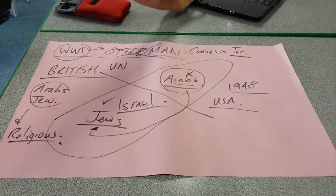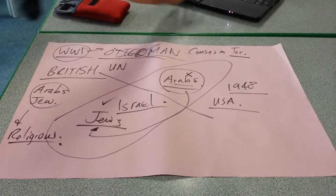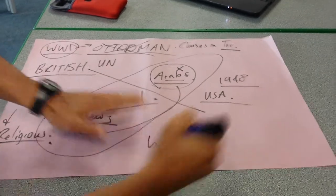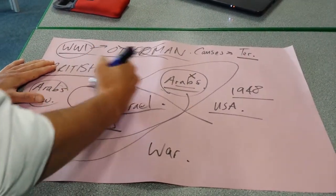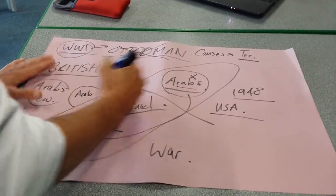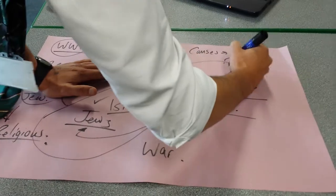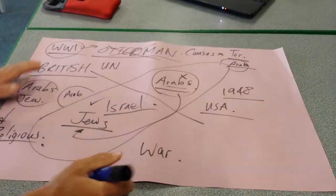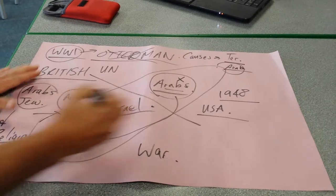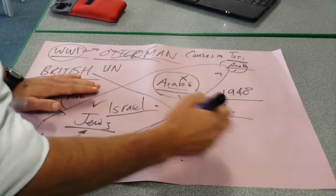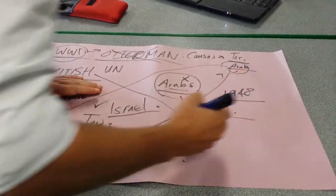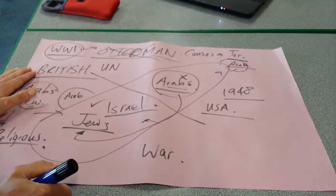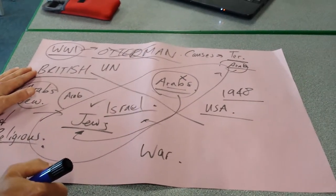Naturally, the Arab Palestinians were not going to like this. We tend to find that there was a wave of war, because lots of the neighbouring countries around Israel — such as Egypt, Syria, and Jordan — are all Arabic countries. So we had a war between all these surrounding countries and the independent Jewish state of Israel.